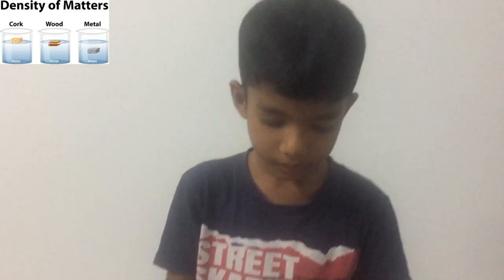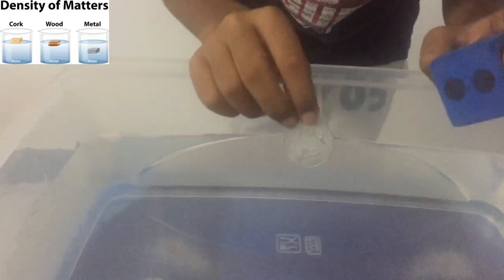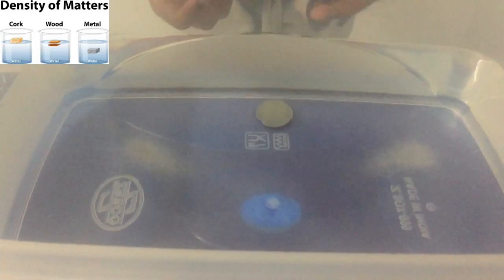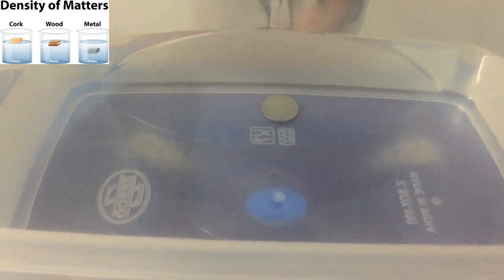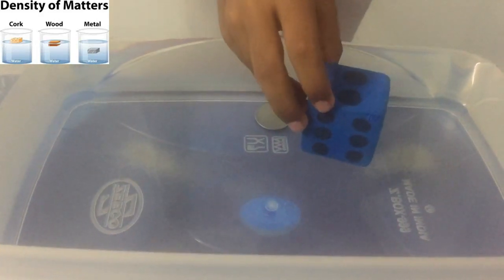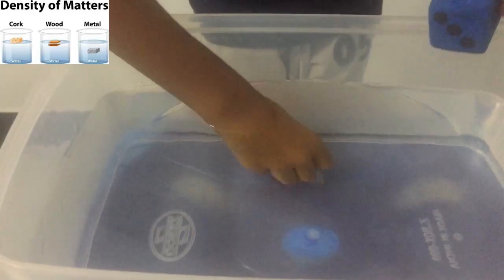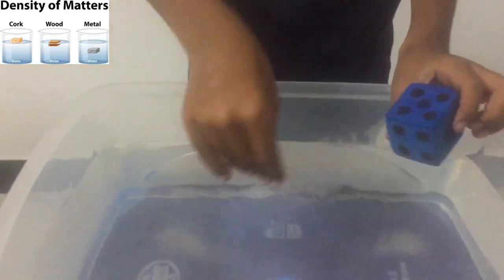Now for solid items — I have a cork and a metal coin. When I put this metal coin in the water, it sinks because it is more dense than the water. If I put this cork in the water, it floats because cork is less dense than the water. That's why the coin sinks and the cork floats.